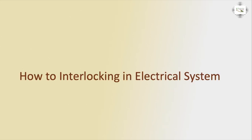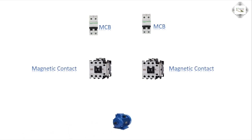Hello viewers, today I discuss how to do interlocking in an electrical system. First connection: the MCB circuit breaker, magnetic contactor, or single phase motor connection.